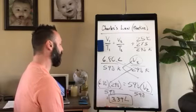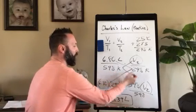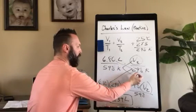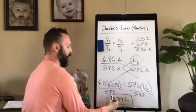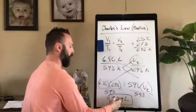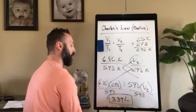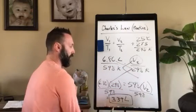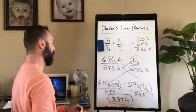So if we look here, our temperature went down by quite a bit, not quite half. So because of that direct relationship between volume and temperature, our volume should have went down proportionally, and it did down to 3.39 liters.